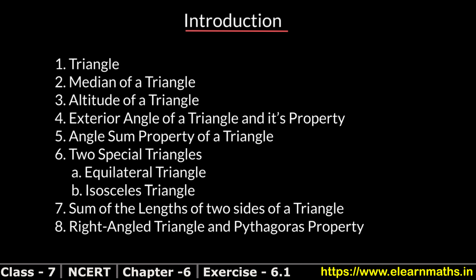Today we will study Chapter 6, Triangles and its Properties. First we will see what is a triangle, then we will study what is the median of a triangle, what is the altitude of a triangle. Then we will study the exterior angle of a triangle and its property, which is a very important topic. Next, the angle sum property of a triangle, two special triangles — equilateral and isosceles — sum of the length of two sides, and finally the right angle triangle and Pythagoras property.